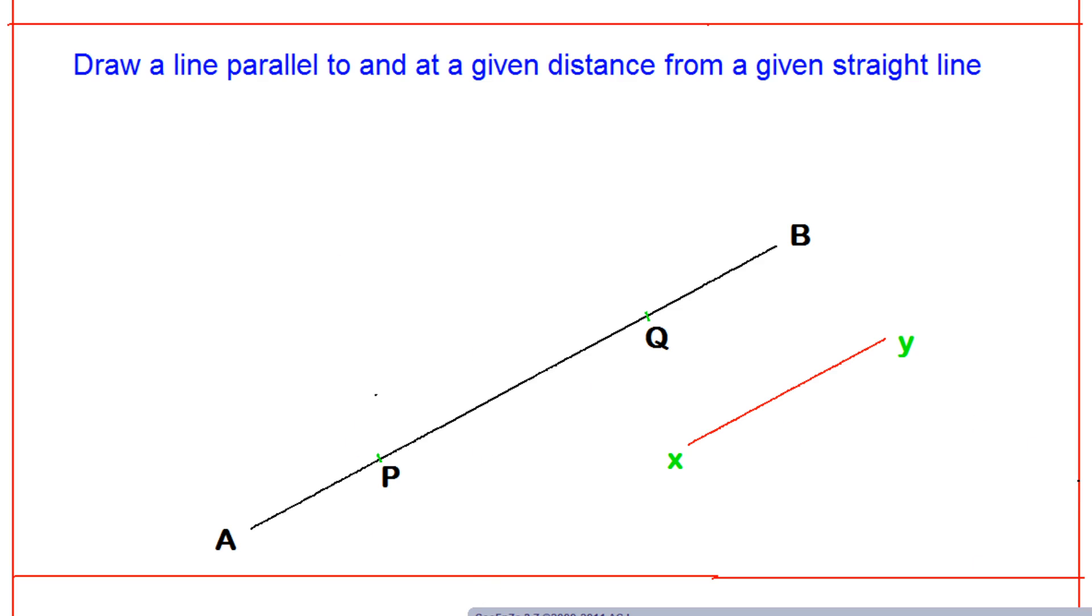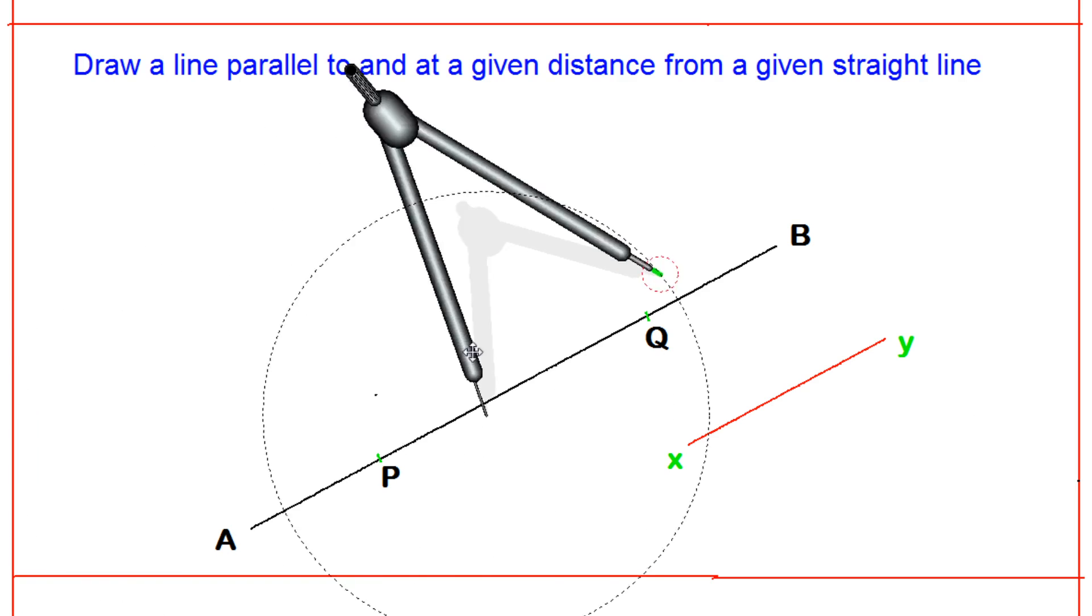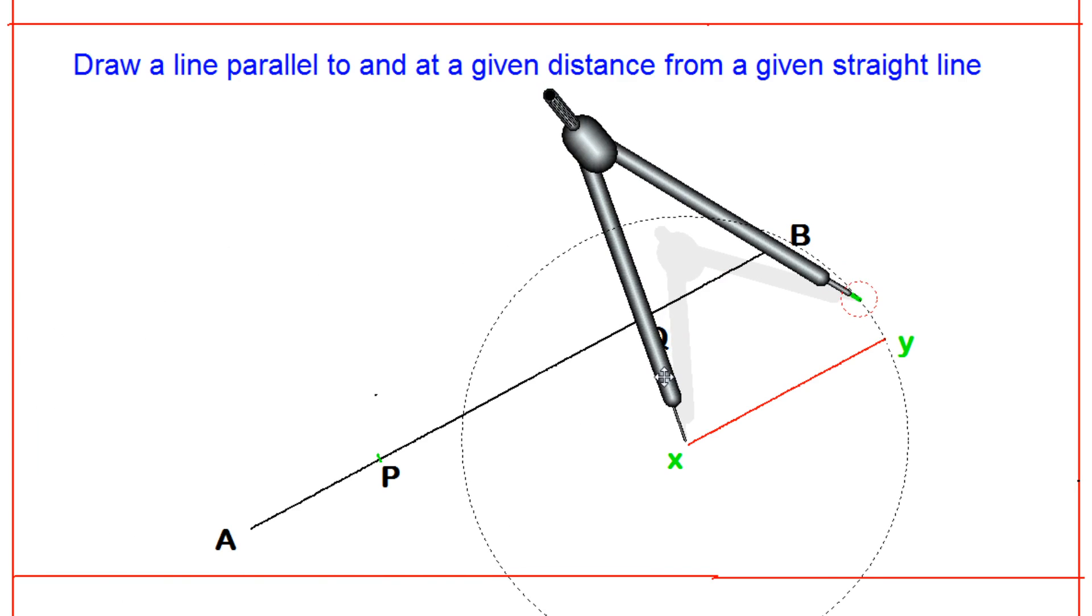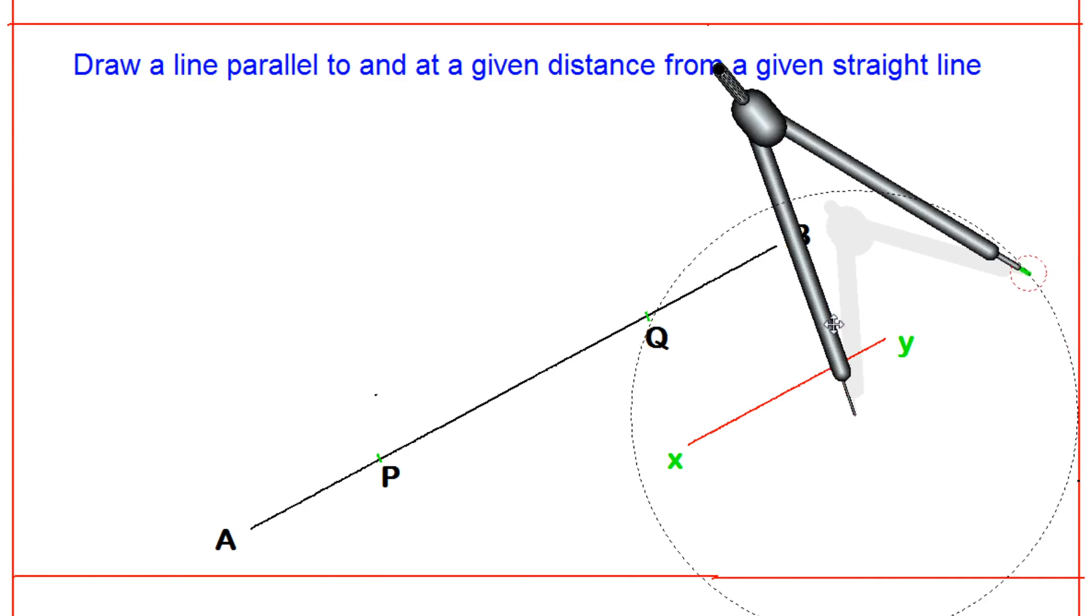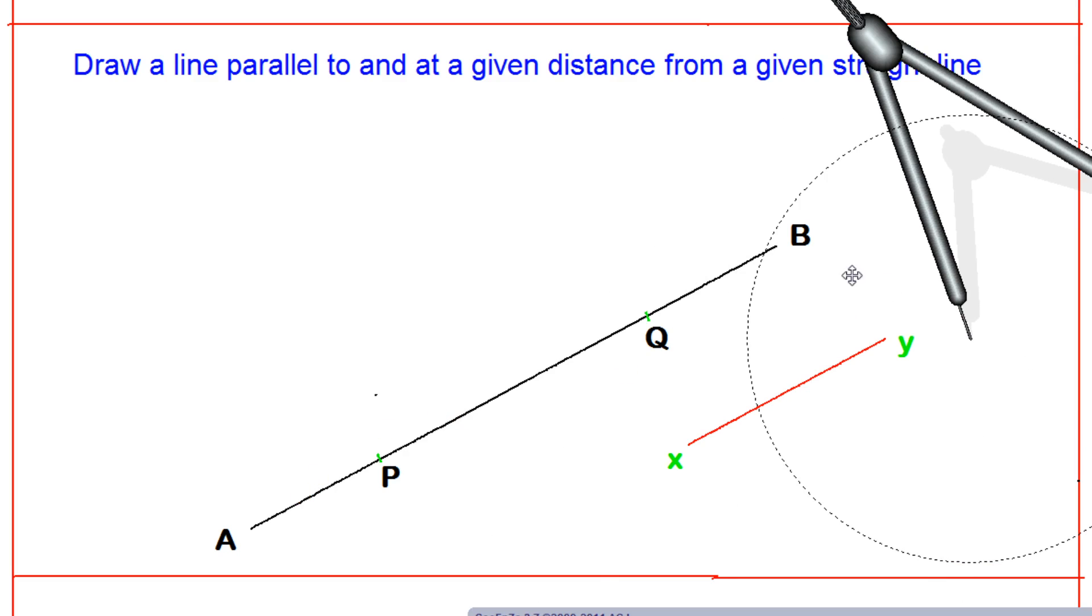To do that, I need a compass. Let us take the compass and get a distance equal to XY. Take the distance exactly, this distance is equal to XY. Now take any two points, so I have taken two points P and Q at your convenience on the given line AB.